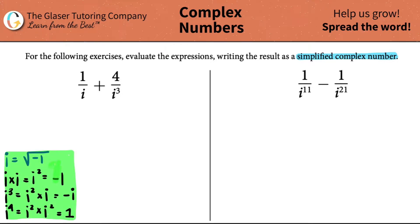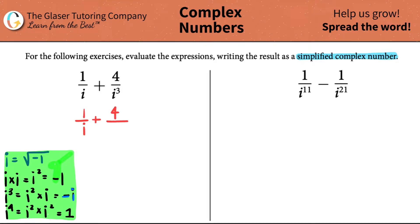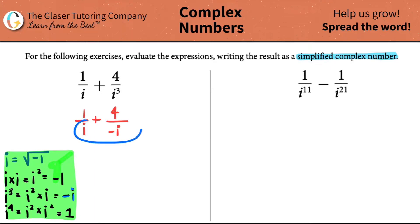So one divided by i — this is already in its simplified form, I can't do anything with that. However, there's an i to the third here, an i cubed, which I can simplify. We said that i to the third equals negative i. So instead of having it as i to the third, I'm going to write it as negative i. This is the same thing as one over i plus four over negative i. We don't have the same denominator, and remember, i — the imaginary number — can never be in the denominator.